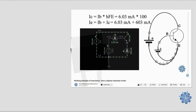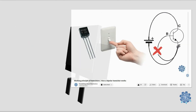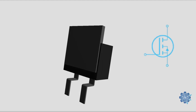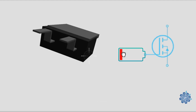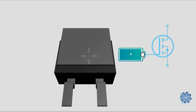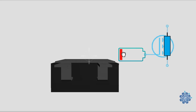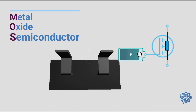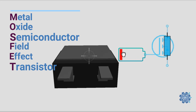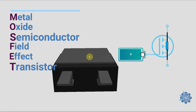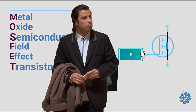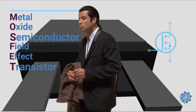Bipolar transistors are current controlled devices, while MOSFETs are voltage controlled devices, and by varying the voltage on one terminal, you will change the resistance between the other two terminals. MOSFET stands for Metal Oxide Semiconductor Field Effect Transistor. Right now they might seem like random words put together, but soon they will make sense.